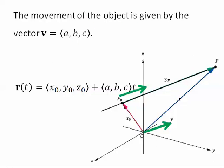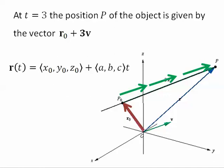The movement of the object is given by the vector v. At t equals 3, the position p of the object is given by the vector r-naught plus 3v.